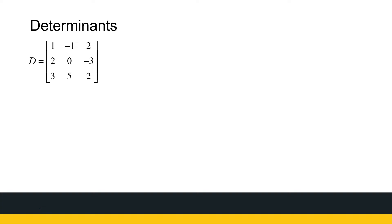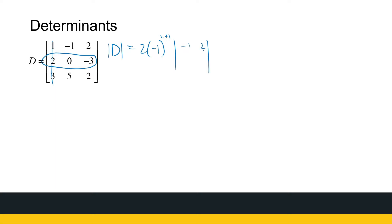We need to be clever about which row or column to choose. We want to choose one that has a zero in it, because it makes our calculation easier. So with cofactor expansion, the determinant of D is 2 times minus 1 to the power of row 2 plus column 1, which is 2 plus 1, times the determinant of the submatrix with entries minus 1, 2, 5, 2. Then plus 0 — and it doesn't matter what comes after the 0, since multiplying by 0 gives 0, making our job much easier.